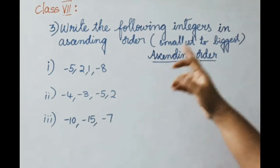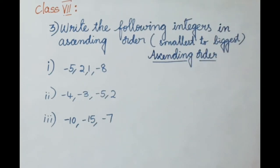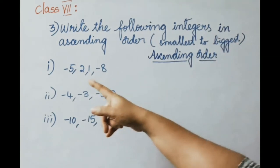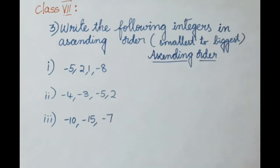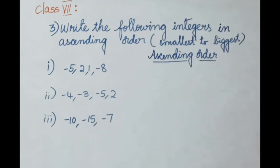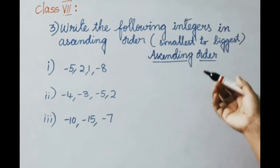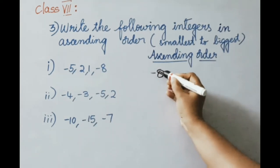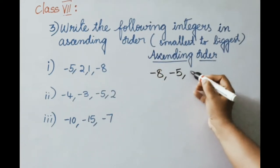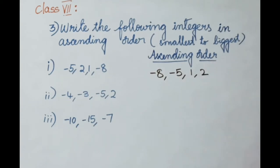See the third sum. Write the following integers in ascending order. Ascending order means arranging the numbers from smallest to biggest. See the first set: minus 5, 2, 1, minus 8. If we remember the number line from left to right, we can arrange integers in ascending order easily. From left to right we get: minus 8, minus 5, 1, 2. So that is the ascending order.